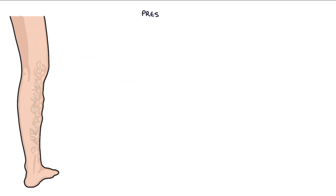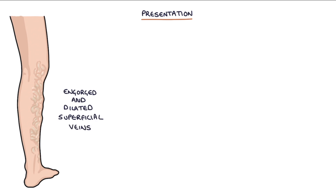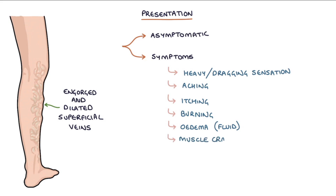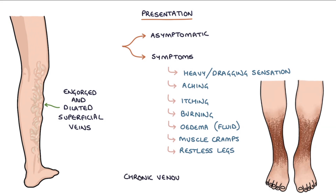Varicose veins present with engorged and dilated superficial leg veins. They may be asymptomatic or have symptoms of a heavy or dragging sensation in the legs, aching, itching, burning, oedema or fluid swelling in the legs, muscle cramps, and restless legs. Patients may also have signs and symptoms of chronic venous insufficiency, such as skin changes and ulcers.